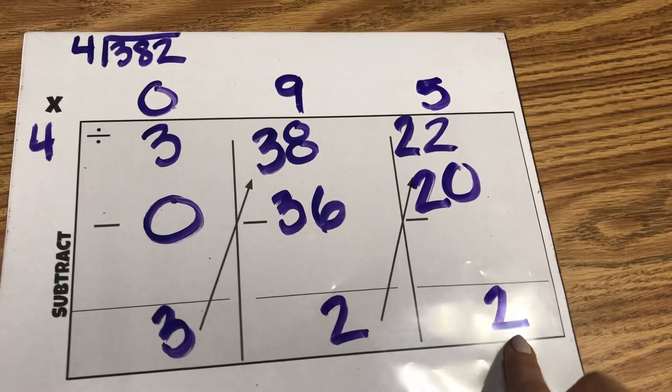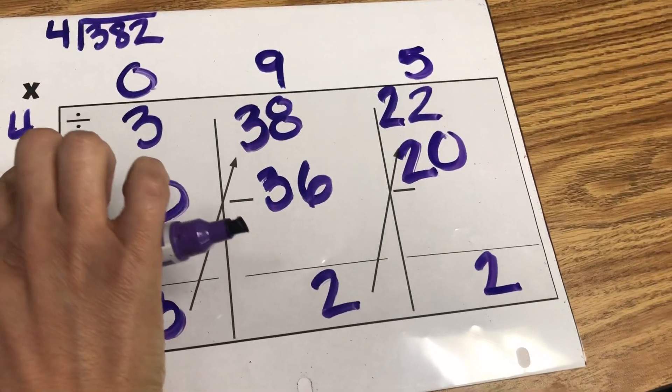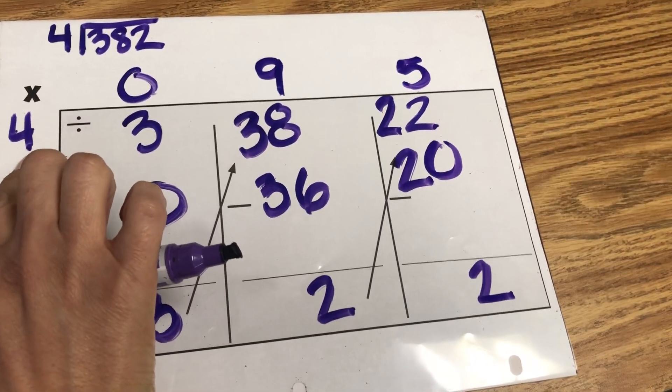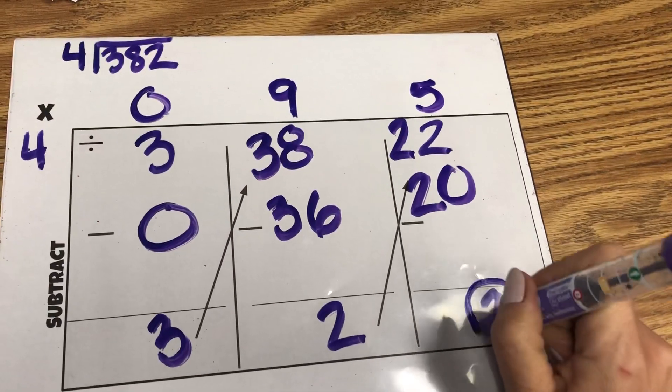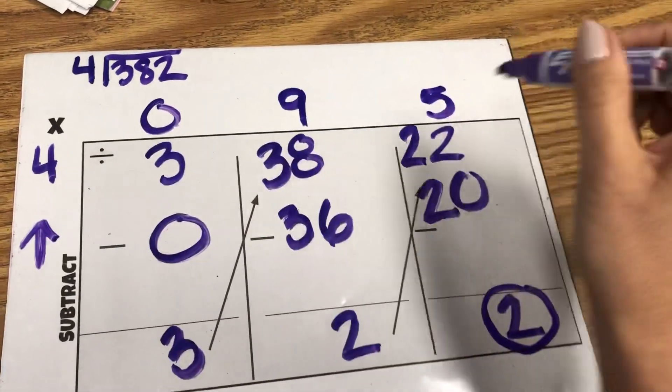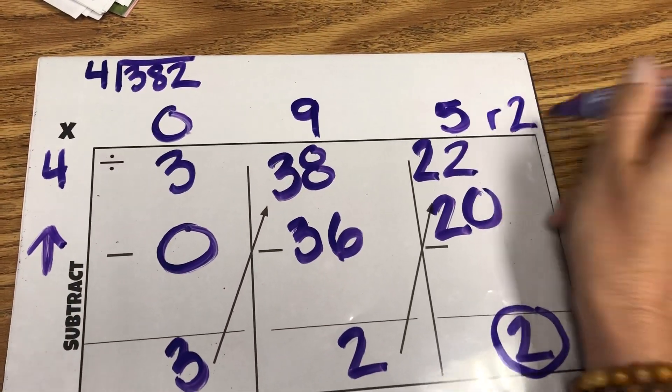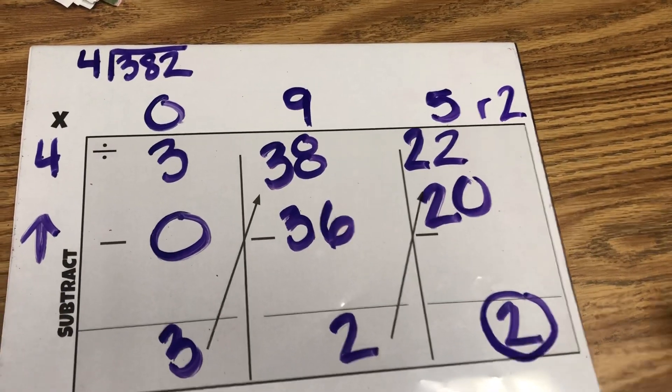When my remainder, my last number, is smaller than my divisor, then I know that I'm finished. So this number is smaller than my 4. So my answer is 95 remainder 2.